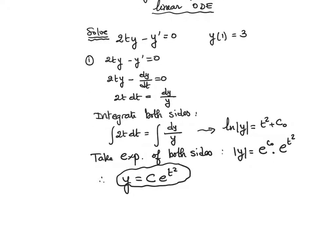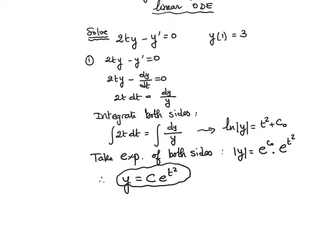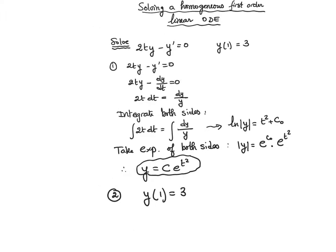Now we want the solution of the initial value problem. We have y(1) = 3, that means when t is 1, y is equal to 3. So we substitute here, so we get 3 equal to C·e^1.